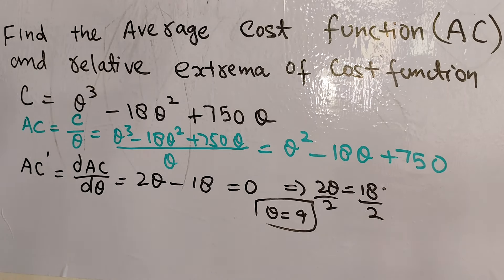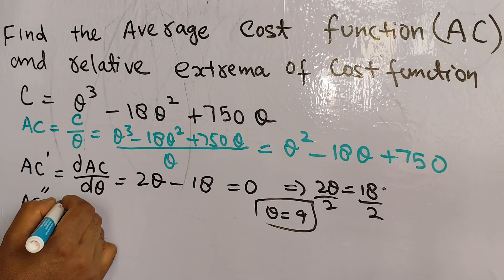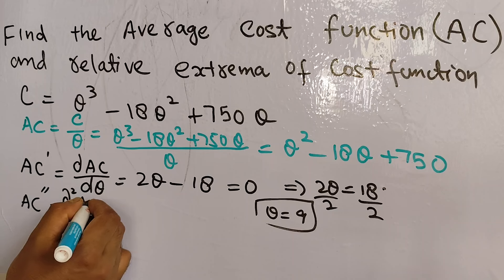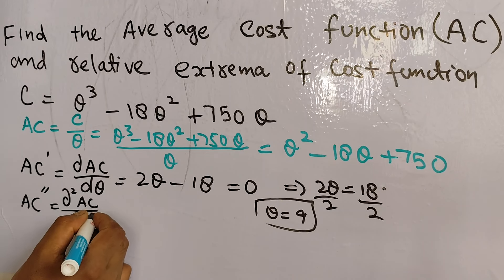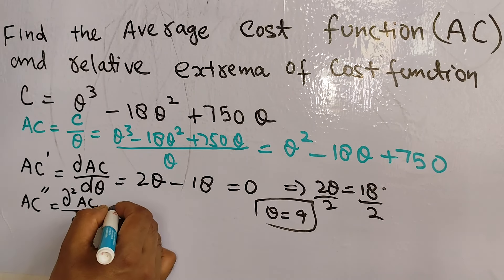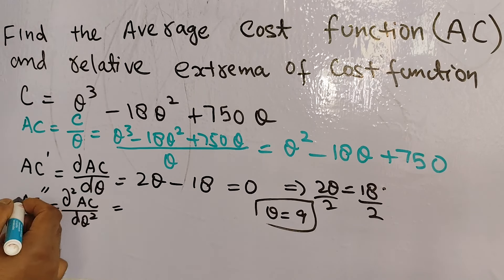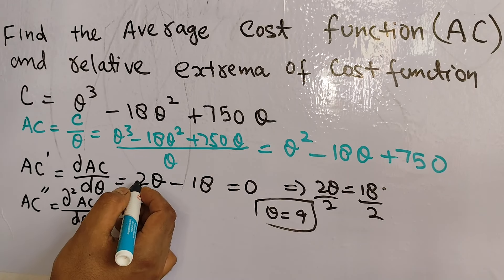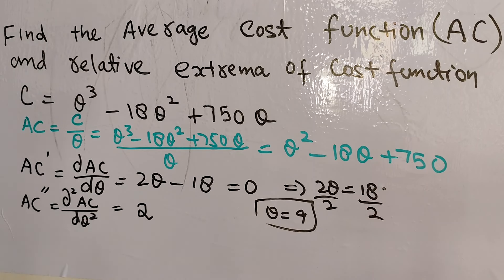Now we check the second derivative, AC double prime — that is D squared AC upon DQ squared. We differentiate the first derivative again with respect to output. The derivative of 2Q is simply 2, so the second derivative equals 2.